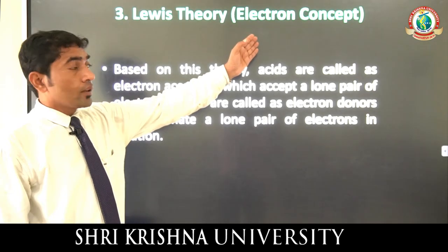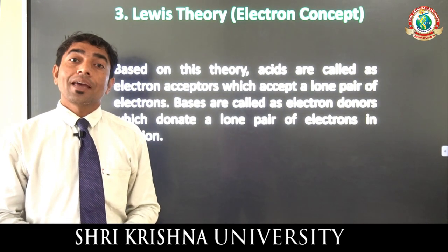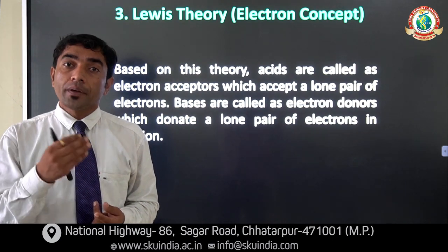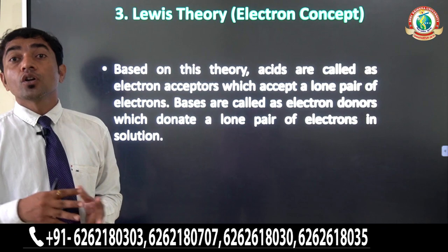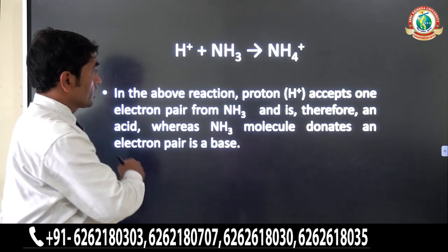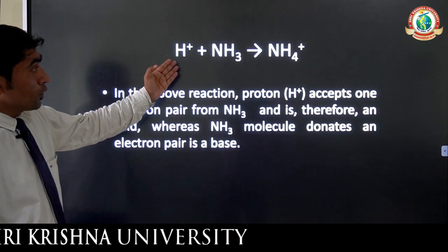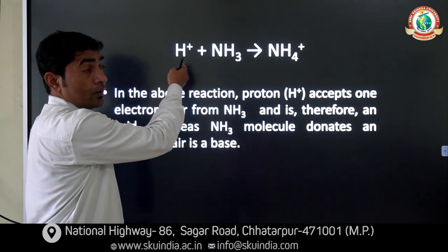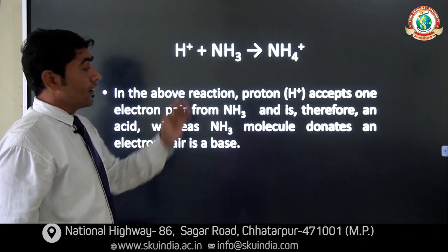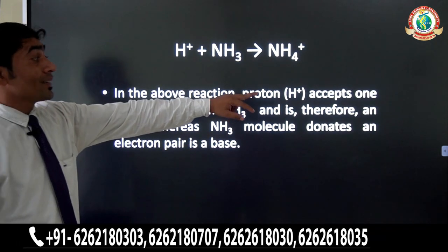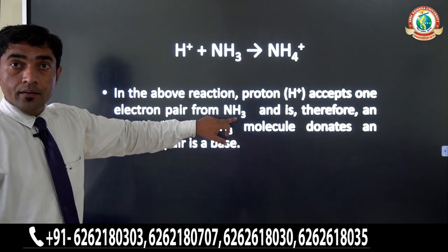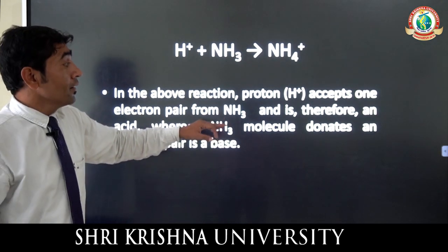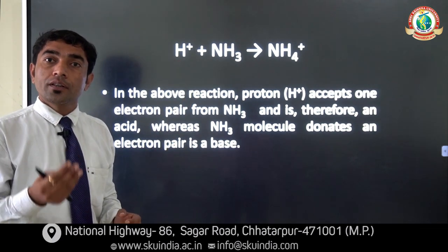According to Lewis theory — also known as the electron concept — acids are substances which accept electron pairs, while bases are substances which donate electron pairs. For example, when NH3 donates its electron pair to H⁺, it forms NH4⁺. So NH3 is the base because it donates electrons, and H⁺ is the acid because it accepts electrons.